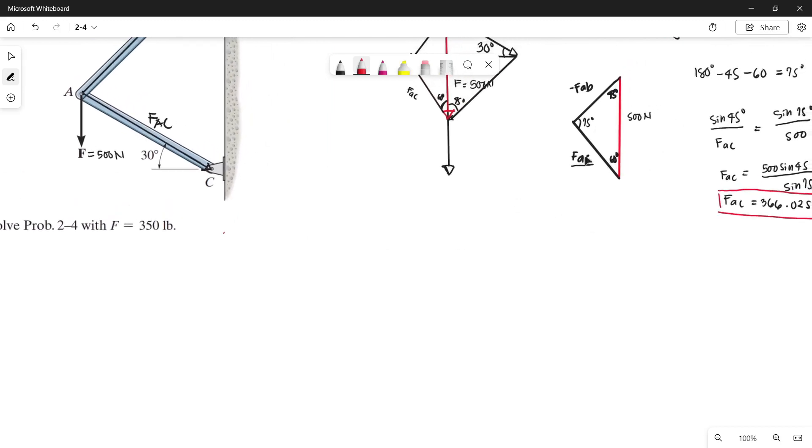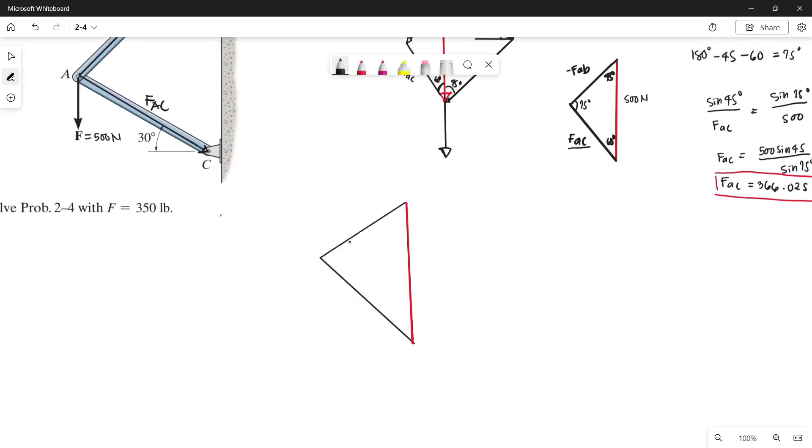So let's again use this triangle. The angles remain the same: this is 45 degrees and this is 60 degrees. So this resultant force F has now changed into 350 pounds. This side here is our force AB and this side is our force AC.